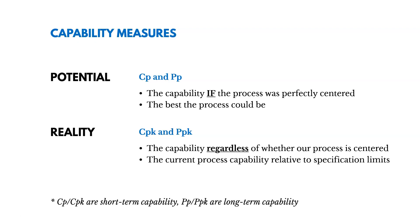Let's talk about capability measures — the ways we measure our process capability. There are two categories: a measurement of our potential and a measurement of our reality. CP and PP are our potential measurements — that's our capability if the process was perfectly centered, the best our process could be. Our CPK and PPK represent our reality: the capability regardless of whether our process is centered right now. The only difference between these pairs is that CP and CPK are short-term measurements, while PP and PPK are long-term measurements.